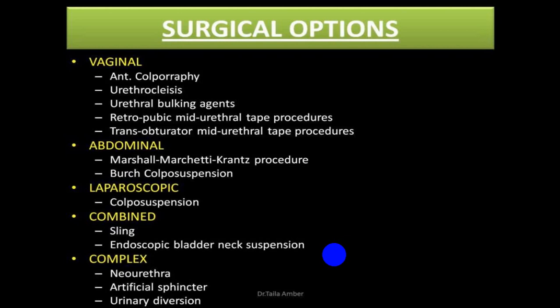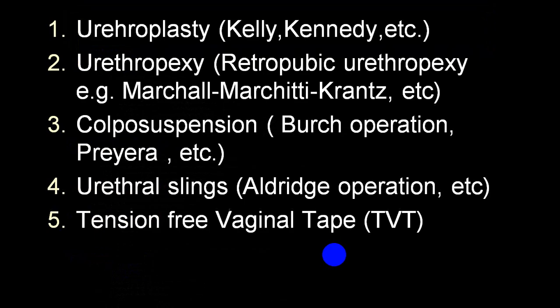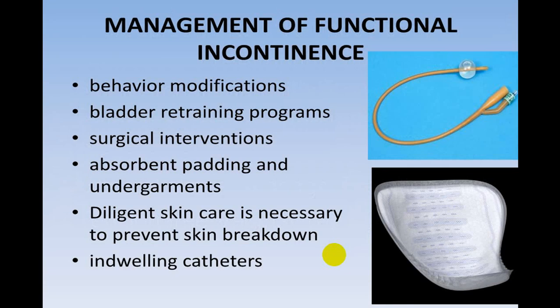Surgical options include urethropexy, sling surgery, and tension-free vaginal tape, with 80 to 90 percent cure rates for a minimum of five years. Surgical intervention can be done via vaginal approach, abdominal approach, laparoscopic approach, or a combination. The most common surgeries preferred are urethroplasty, urethropexy, colposuspension, and tension-free vaginal tape. In case of functional incontinence, treatment includes behavior modification and bladder training, with surgery rarely required, plus absorbent pads, diligent skin care, and indwelling catheters.